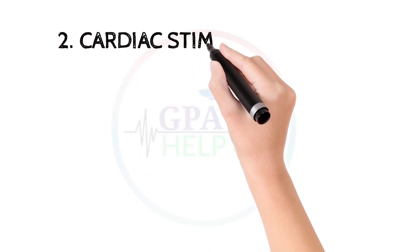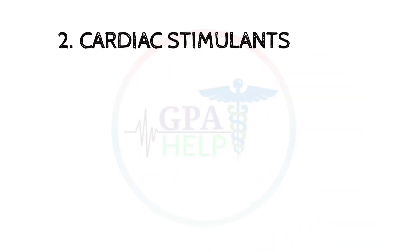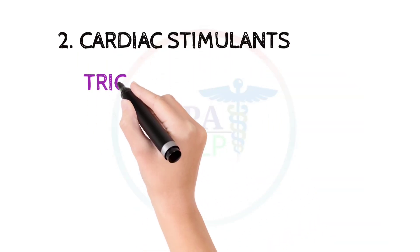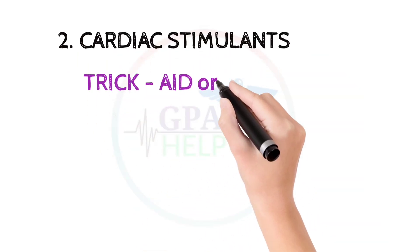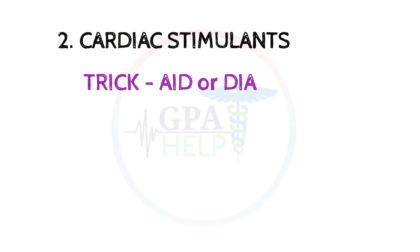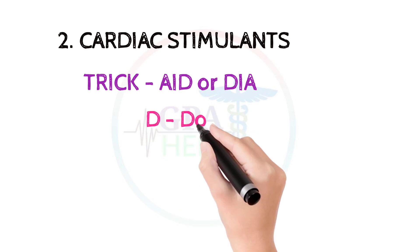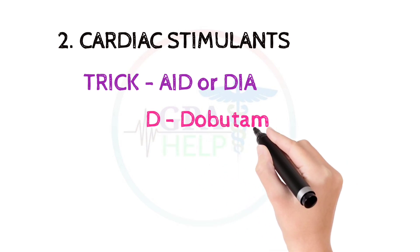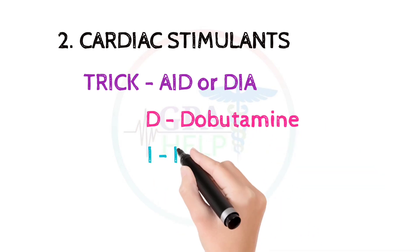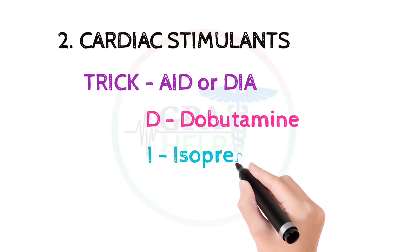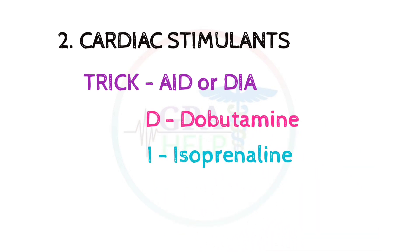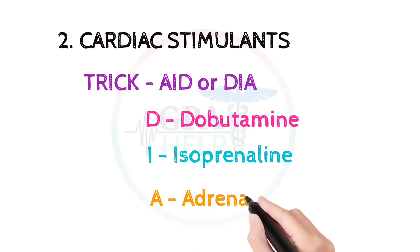The second class is cardiac stimulants. These drugs can be remembered by the trick: DIA. D for dobutamine, I for isoprenaline, and A for adrenaline.